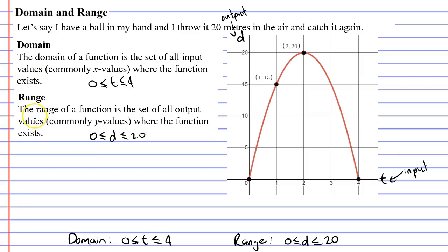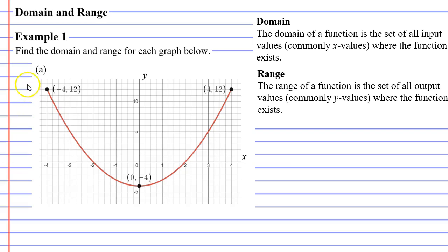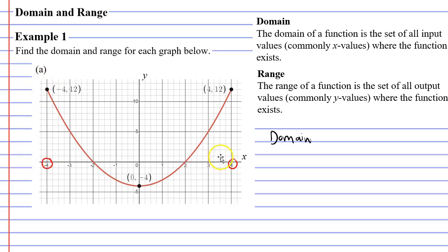Now that we've defined domain and range, let's complete some examples. We'll do question a first. All we need to do is find the domain and range for each graph. Starting with the domain, we look at our horizontal axis — the x-axis — and ask for what values of x does this function exist. It exists between values of negative 4 and positive 4. Beyond negative 4 to the left or beyond positive 4, the graph doesn't exist. So the domain is the set of x values such that x is between negative 4 and 4.